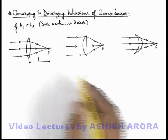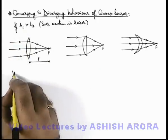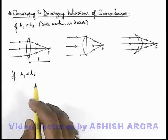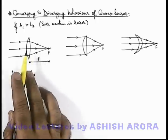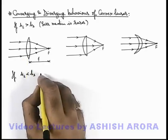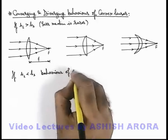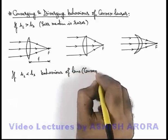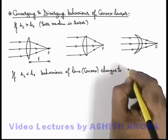Now, if the lens is placed in a denser surrounding, that means if mu of lens is lesser than mu of surrounding, that means the lens is placed in a medium which is denser than the material of which the lens is made up of. Then we can say the behavior of lens, we are talking about convex lens, changes to diverging.